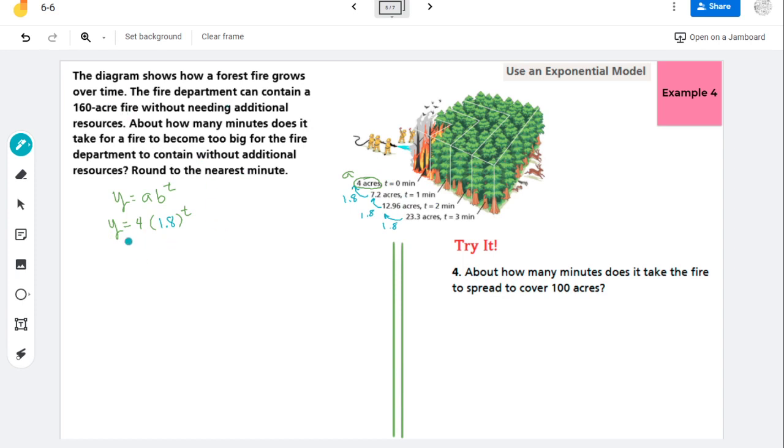So now what we need to do is we need to figure out how many minutes, so we're finding a value of T. Does it take for the fire department to contain without additional resources? So they can contain a 160-acre fire. So that's the size of Y here. So where Y is, I'm plugging in 160. And then the rest of it, we're going to go ahead and try to solve for.